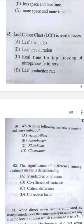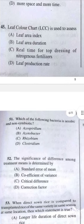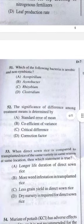Question 51: Which of the following bacteria is aerobic and non-symbiotic? Answer B — Azotobacter. Question 52: The significance of difference among treatment means is determined by C — critical difference value.